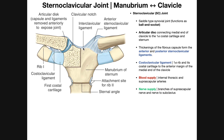Here we see an anterior view of the sternum and the manubrium. This is the patient's left sternoclavicular joint, and over here is the patient's right sternoclavicular joint. Let's get some landmarks so we know what we're looking at. Right here is the superior part of the sternum — this is the manubrium of the sternum. Down here is the sternal body, which is inferior to the manubrium. There's a joint that connects the manubrium to the body of the sternum.